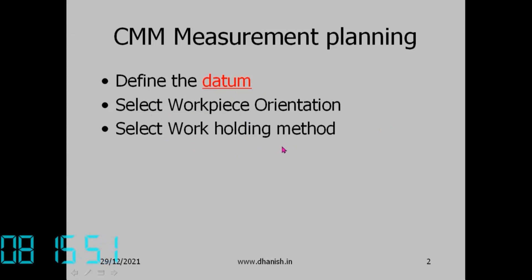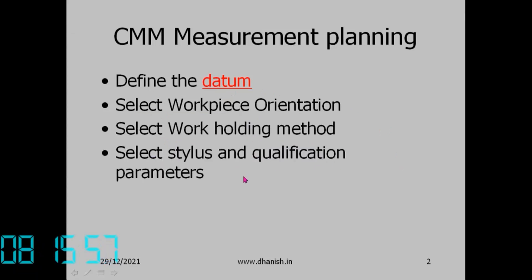Select the work holding method — how will you hold the workpiece. Then we have to select the stylus and qualification parameters: what is the stylus diameter, stylus extension. When qualifying the stylus, we run it at a certain speed using a calibration sphere, taking several points to calculate the position of the stylus and its diameter.